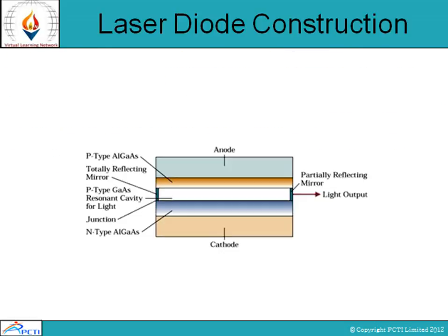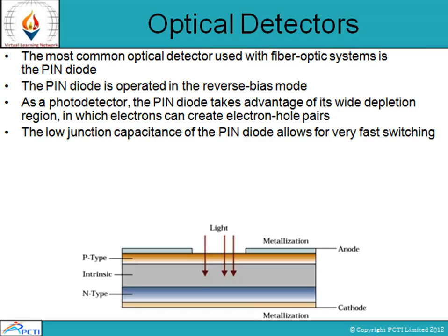In a laser diode, gallium arsenide is used as a kind of light source. There is a cathode and there is an anode. When some kind of power supply comes between this cathode and anode, it forces the gallium arsenide to produce a kind of light from it.